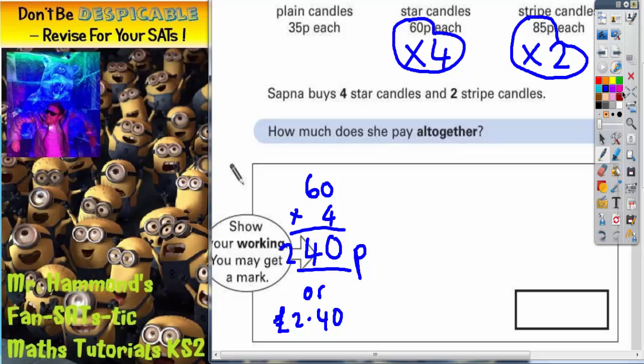Now for the striped candles. Striped candles, she wants two of them, so that's 85p times by two. Again, do some column method. Two times five is ten. Put the zero in, carry the one. Two times eight is sixteen plus that one is seventeen. So for the striped candles she's paying a hundred and seventy pence or one pound seventy.